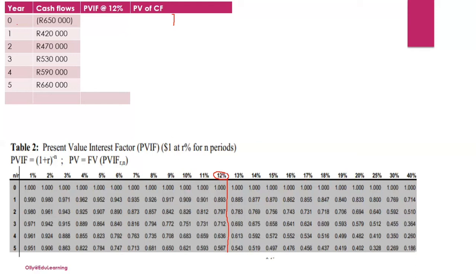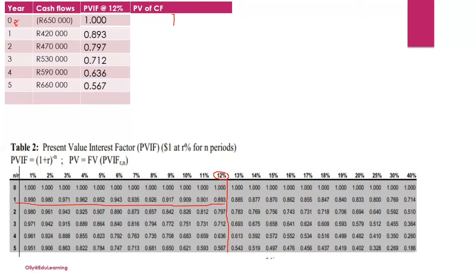Since the rate is 12 percent, go to the 12 percent column. Year zero has a PVIF of 1. For year one, moving down to n=1 at 12 percent gives 0.893. Continue doing the same for years two through five until your PVIF column is complete.